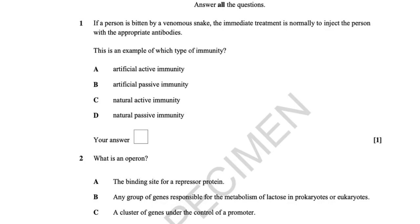The paper begins with a question on immunity. If a person is bitten by a venomous snake, the immediate treatment is normally to inject the person with the appropriate antibodies — those complementary to the snake venom — which would agglutinate or precipitate the venom and prevent it from affecting the person. This is an example of passive immunity.